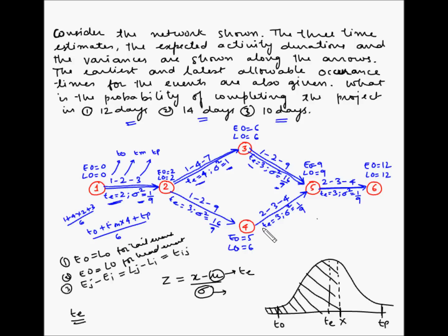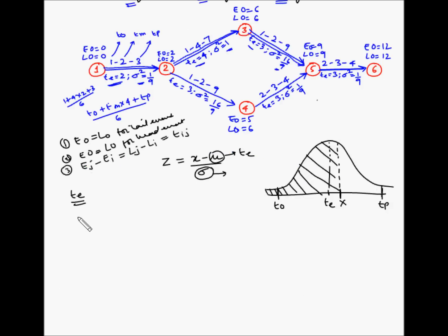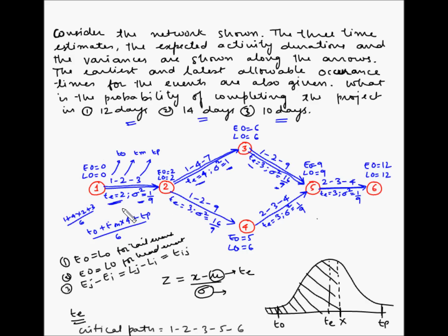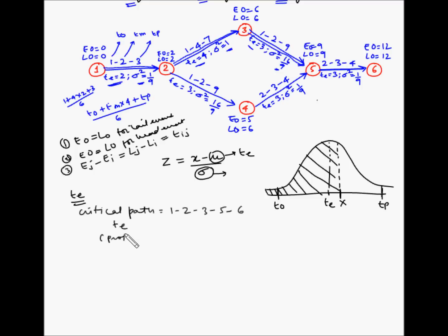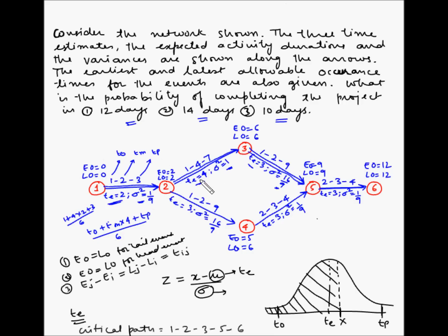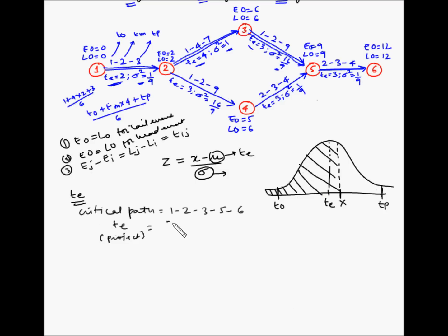The critical activities identified are 1-2, 2-3, 3-5, and 5-6. So the critical path is 1 → 2 → 3 → 5 → 6. The expected duration of the project equals the sum of the expected durations of the critical activities: Te = 2 + 4 + 3 + 3 = 12 days. We have now found the expected duration of the project.